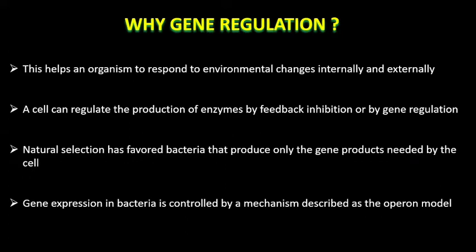The question arises: why is gene regulation important? What is the significance of gene regulation, and why is the operon model required to understand its importance? The answer is that gene regulation ensures that the appropriate genes are expressed at the proper time. This helps the organism to adapt itself according to changes occurring in the environment of the cell, internally as well as externally. It also helps cells to send feedback on whether a particular enzyme or protein needs to be transcribed or translated, and helps bacteria favor natural selection for its very survival.